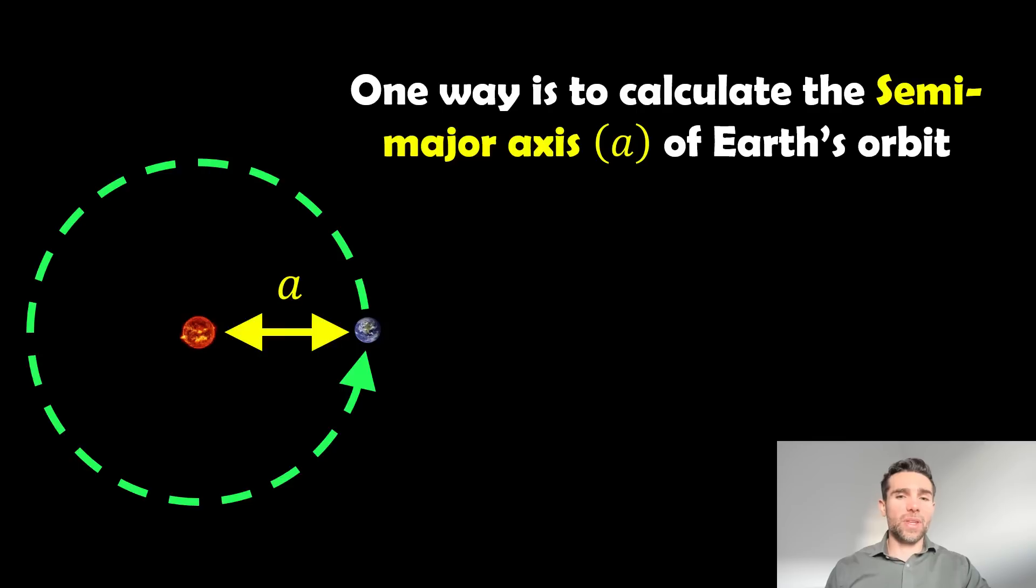First we need to know the semi-major axis of Earth's orbit. We can take that as the average distance between the Earth and the Sun, because the semi-major axis is essentially half the major axis of the ellipse of the orbit. Earth's orbit is not perfectly circular, it's an ellipse. The semi-major axis is essentially half of the major axis along that ellipse. That is the average distance between the Earth and the Sun during one orbital period.